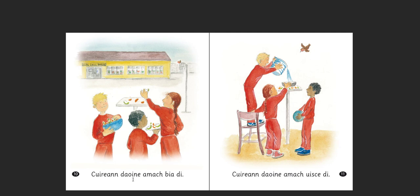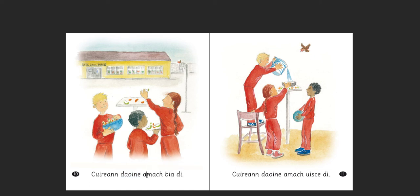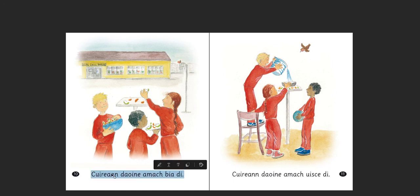Cuireann daoine amach bia di — people put out food for her. Again, we have this verb 'cuir' and we have this suffix 'ann,' so 'do put.' People do put out food, and then 'di' means for her — 'dom' for me, 'duit' for you, 'di' for her. And a very similar sentence: cuireann daoine amach uisce di — people do put out water for her.